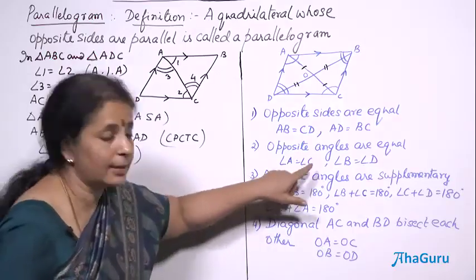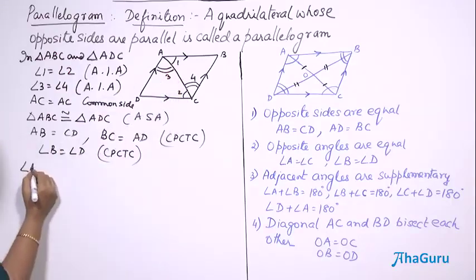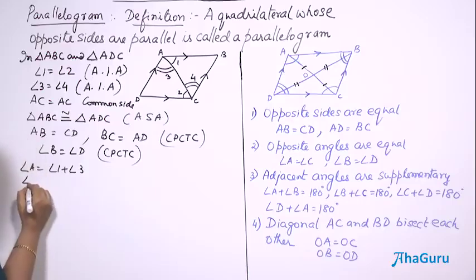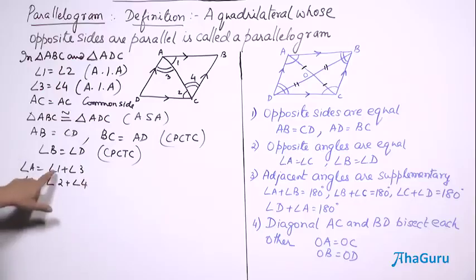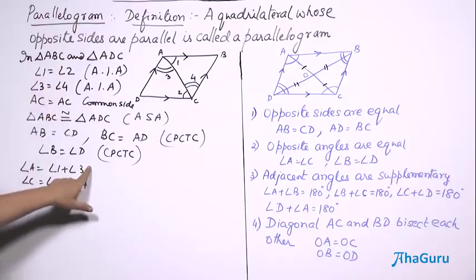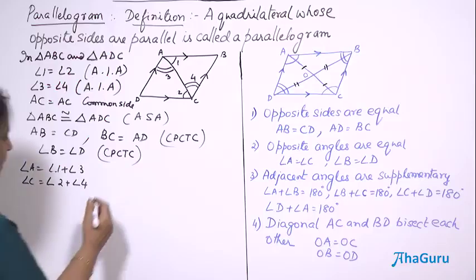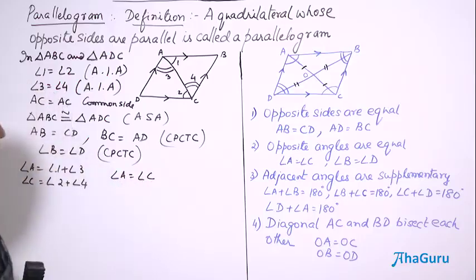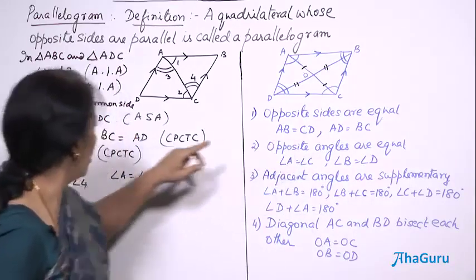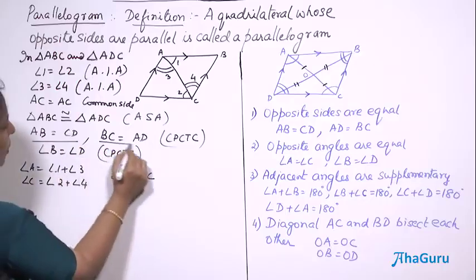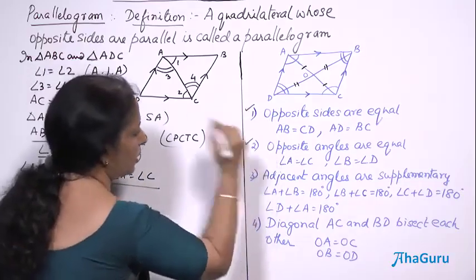From the same congruent triangles, the third angle must also be equal: angle B is equal to angle D — also by CPCTC. The only thing remaining is to show A is equal to C. Angle A equals angle 1 plus angle 3, and angle C equals angle 2 plus angle 4. Since angle 1 equals angle 2 and angle 3 equals angle 4, the totals are also the same — so angle A is equal to angle C.